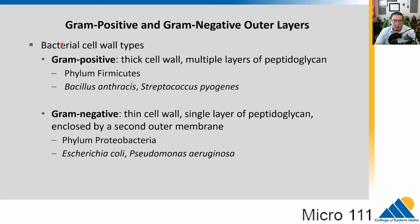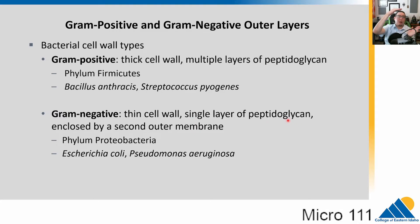Let's revisit the differences between gram-positives and gram-negatives. Gram-positives have a thick cell wall with multiple layers of peptidoglycan. Common examples include the phylum Firmicutes, Bacillus anthracis, and Streptococcus pyogenes. Gram-negatives have a thinner wall with a single layer of peptidoglycan but two membranes surrounding it. The common phylum is Proteobacteria, including E. coli and Pseudomonas aeruginosa. This different wall structure means we use different antibiotics against them.